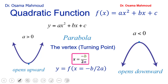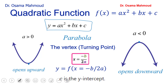Once you have the x-coordinate for the vertex point, substitute it into your quadratic formula to find Y, giving you the turning point. You can also find the x-intercept by putting Y equal to 0 and solving: 0 = AX² + BX + C. C is the y-intercept, because when you put x equal to 0, Y equals C.